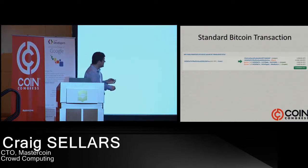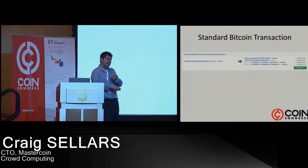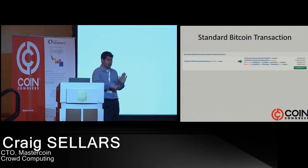The fun part is Bitcoin is basically a two-dimensional transaction ledger — it says I'm moving a balance from point A to point B. Since we're using it as transport and not as actual Bitcoin, all of a sudden this extra encoded metadata has a third layer to it. So when you look at this transaction on the Bitcoin blockchain, it's perfectly valid.